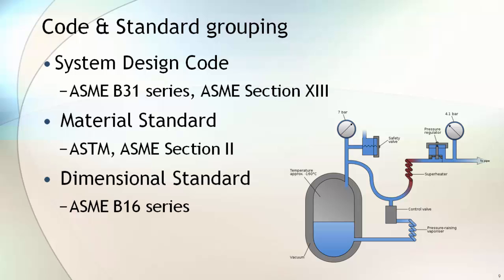The last on the list is dimensional standard. Dimensional requirements of standard piping components are covered in various dimensional standards. The ASME B16 series is an example. To construct a safe and reliable process plant, you will require all three categories of code and standard during design, fabrication, construction, and installation.